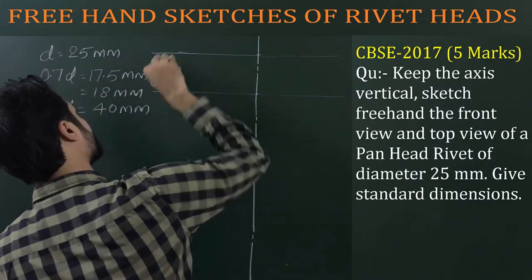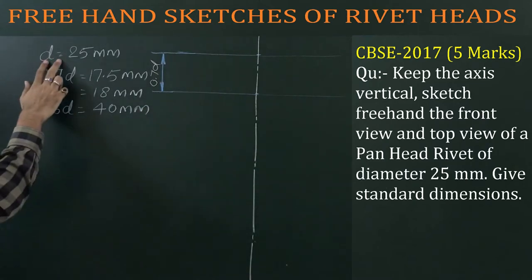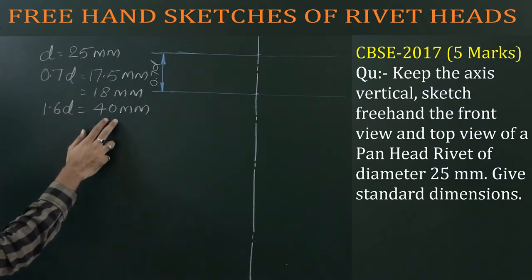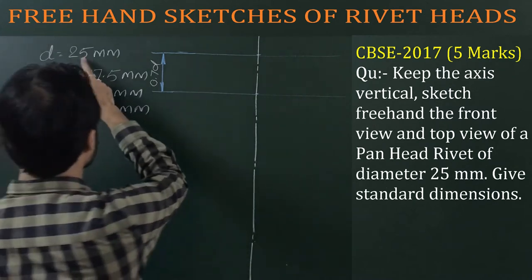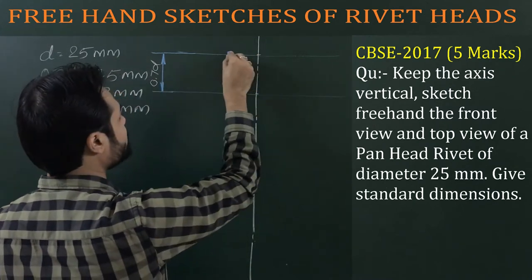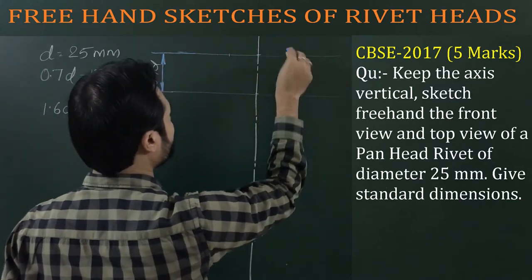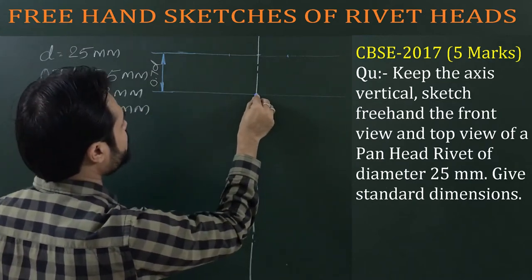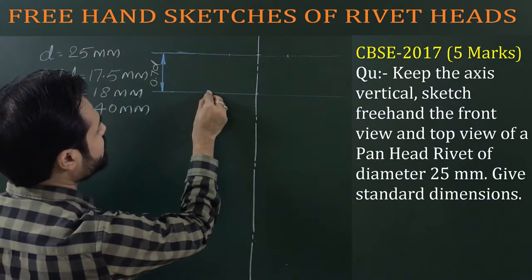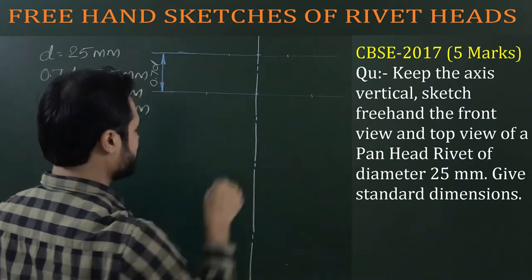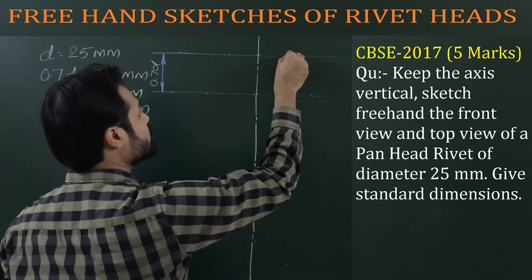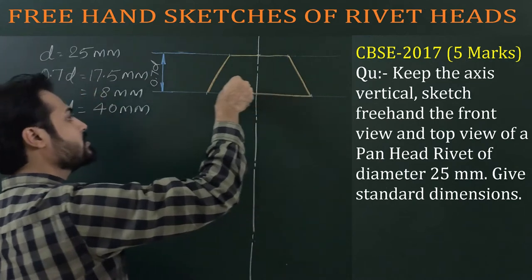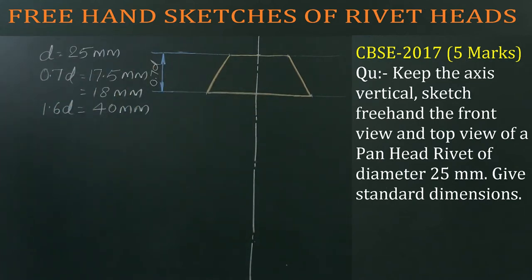The head's upper diameter is 25 mm and lower diameter is 1.6D or 40 mm. Mark these two limits: first, half of 25 on each side of the upper line, then half of 1.6D — that is, half of 40 equals 20 mm — on each side of the lower line. Then use a dot pencil for final outlines and draw the head of the pan head rivet.